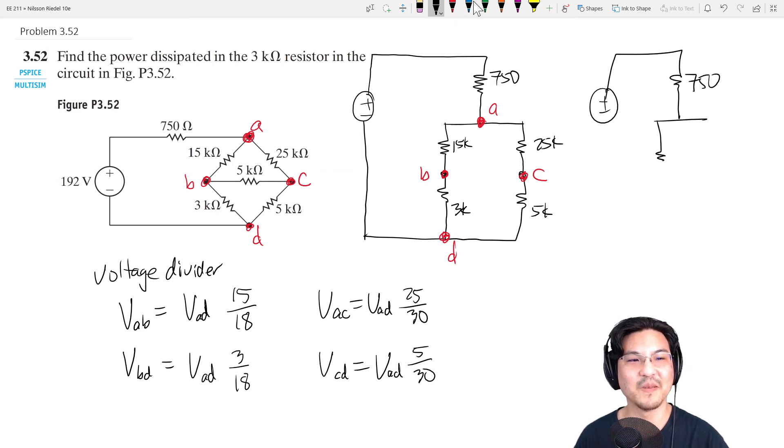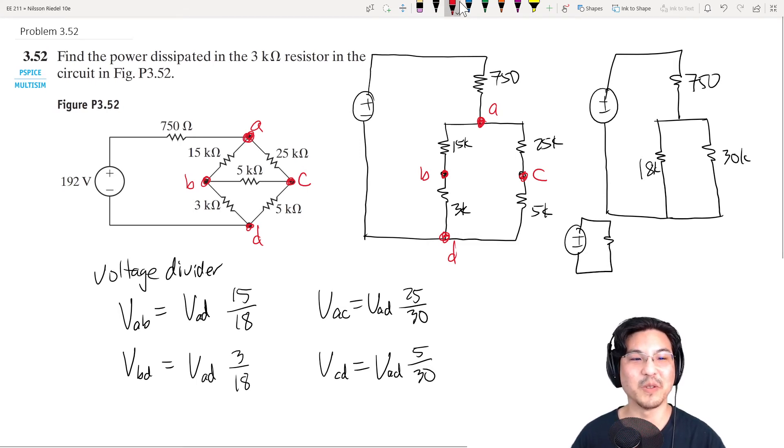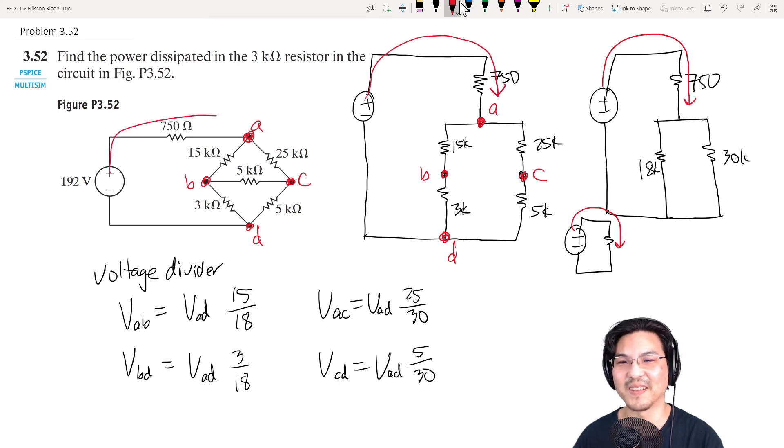You can combine these two in series, so that's 18k. Combine these two in series, that's 30k. And then these two in parallel, just combine those two in parallel. And then that in series with this. And then you have basically the equivalent resistance of the entire circuit, which means you will know this current, which is the same as this current coming out of the source.